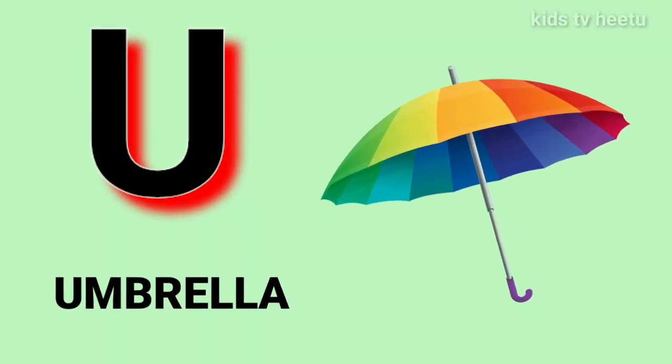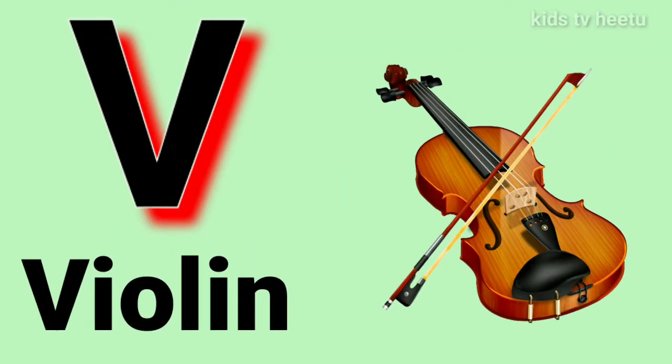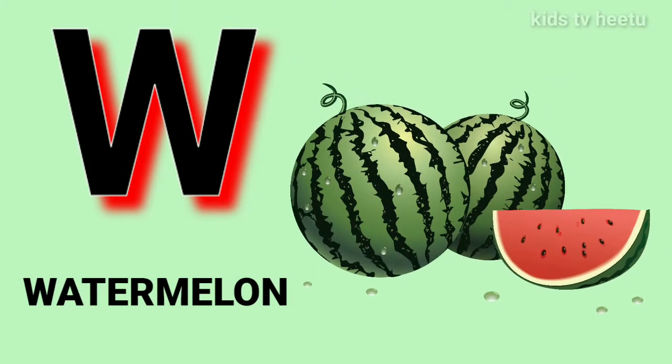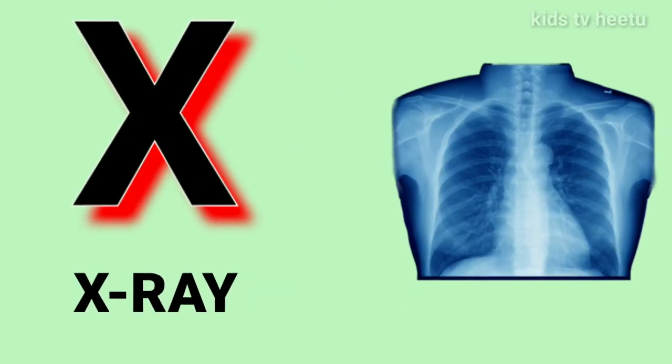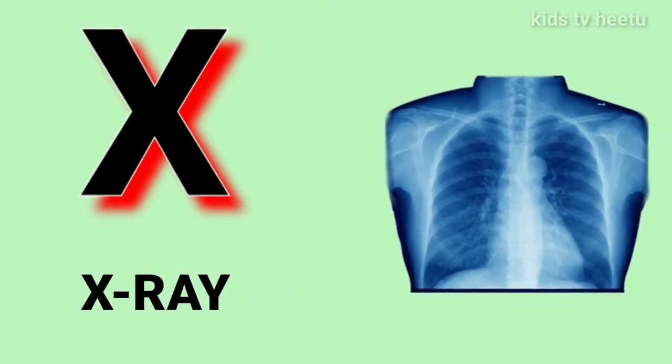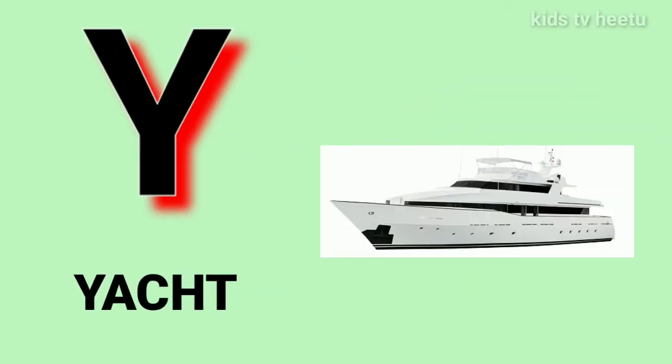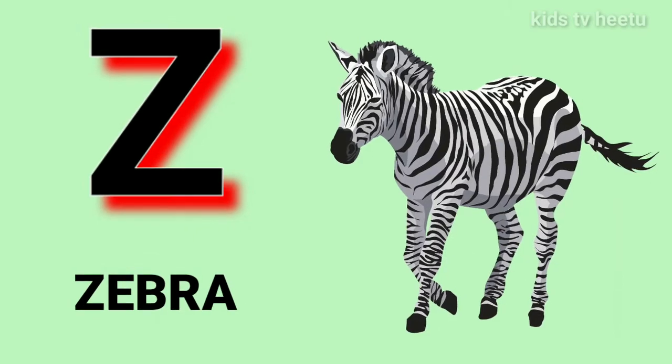U for umbrella, V for wine, W for watermelon, X for a stray, Y for yard, Z for zebra.